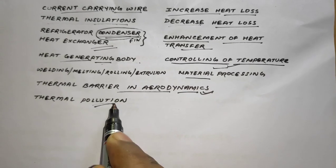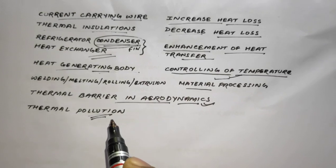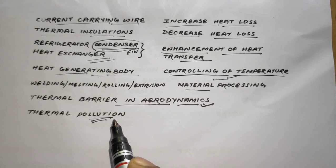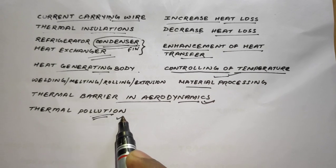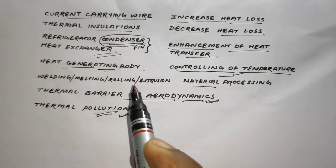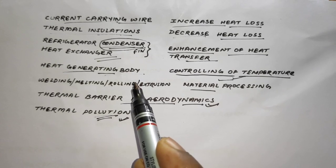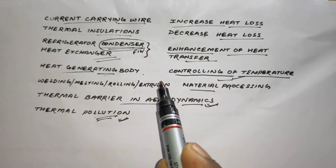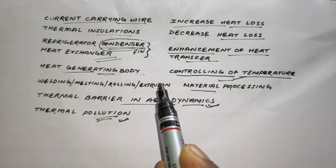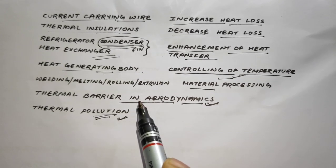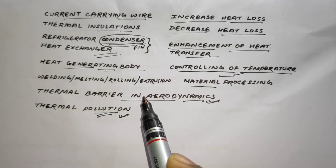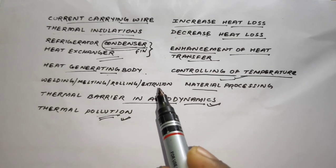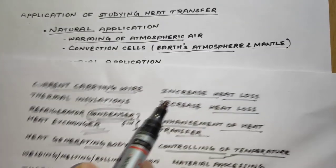Another example is thermal pollution, where waste heat discharged into air or water creates a heat transfer problem. As a mechanical engineer, you may encounter problems where your job is to increase heat losses, decrease heat losses, enhance heat transfer, or control temperature so that proper heat transfer processes take place inside specific locations.